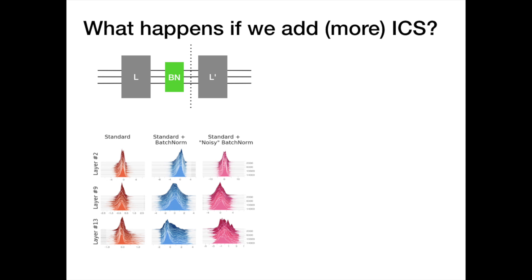As we'd expect, adding this noise introduces even more internal covariate shift than exists in the unnormalized network. So what happens to training now? Does this eliminate the advantage that batch norm provides?